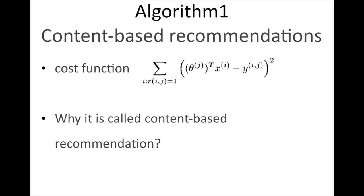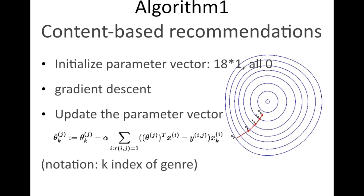The cost function of it is pretty simple, which is the sum of the square of difference between the real ratings and the predict ratings. Another reason to call this algorithm content-based recommendation is that it does not use the relationship between the users. We will see it in the next step of this algorithm. The next step is to use gradient descent to update the parameter vector to get into the local minimum of the cost function.